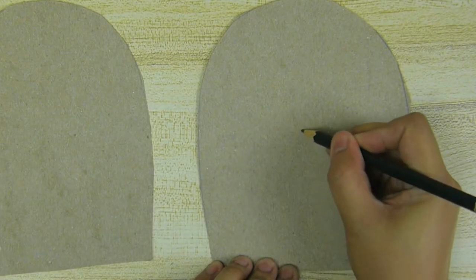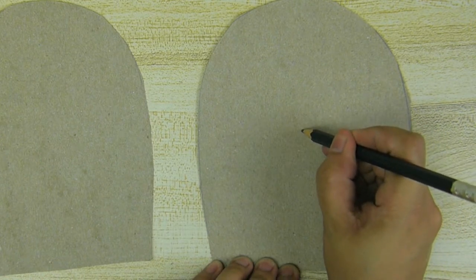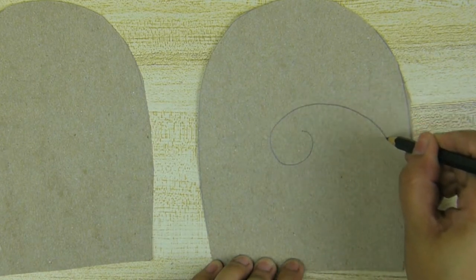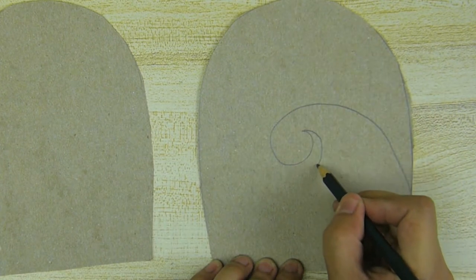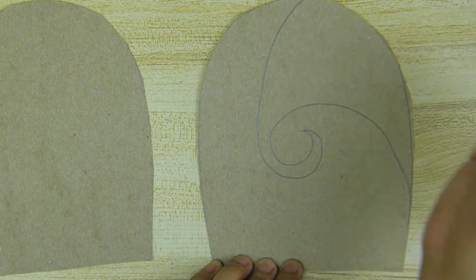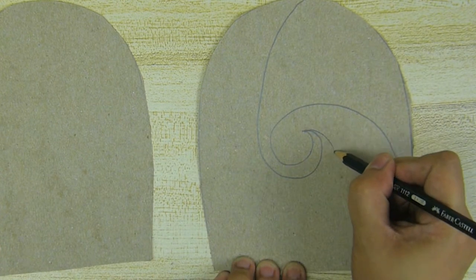Now we are going to draw the spirals. First, you should roll to the right. Now roll to the top. And now roll to the left.